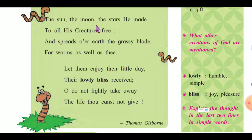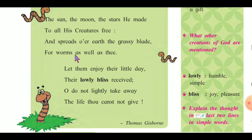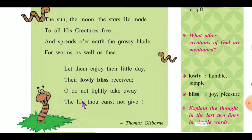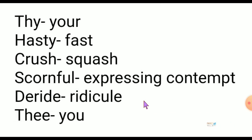The sun, the moon, the stars — jo God ne banaya hai, woh sab ke liye free banaya hai. And spread over earth the grassy blade, for worms as well as thee — jo ghaas zameen pe ugti hai, woh bhi sab ke liye hai, worms ke liye hai, and as well as you. Let them enjoy their little day, their lovely bliss received — God ne unko jo ek chhota sa gift diya hai, unka jo chhota sa life hota hai, toh woh unko enjoy karne do, unko crush mat karo. And do not lightly take away the life thou canst not give — God ne life di hai, hum logon ne nahi di unko, toh yeh jo life hum unhe nahi de sakte, toh yeh humein unse chhinna bhi nahi hai.